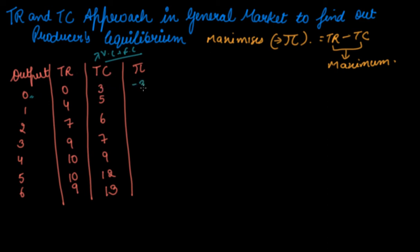So the profit values are: minus 3, minus 1, then 1, 2, again 1, then minus 2, and minus 4. We will now plot this on a graph.